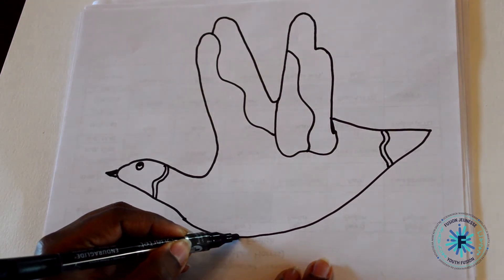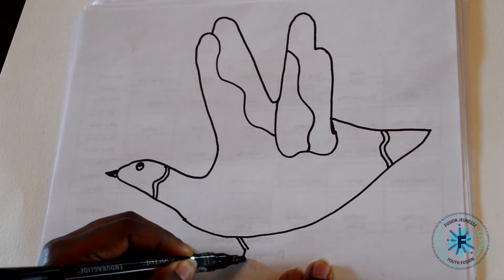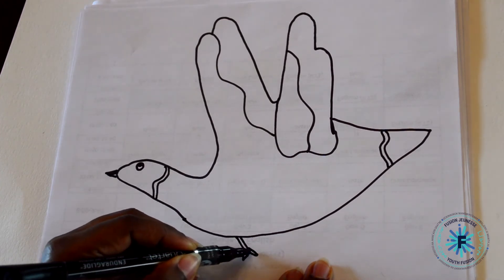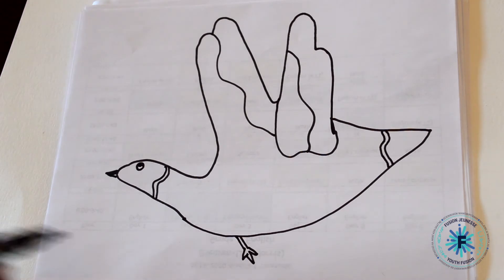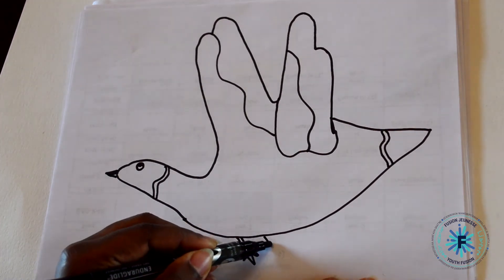For the legs and the feet, draw two vertical lines and three V's touching one another to draw the webbed feet. Do the same for the second foot.